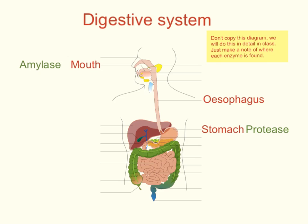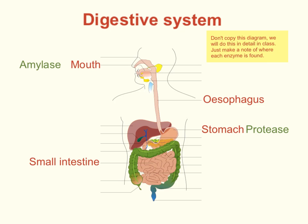The food then travels from the stomach into the small intestine, which is the coiled-up area lower down. The small intestine has two vital functions. First, the rest of digestion takes place there — continuing the digestion of carbohydrates and proteins, and also digesting fats. We've got three types of enzymes: carbohydrases continue breaking sugars into glucose molecules, and protease enzymes continue breaking short chains of amino acids into single amino acids.